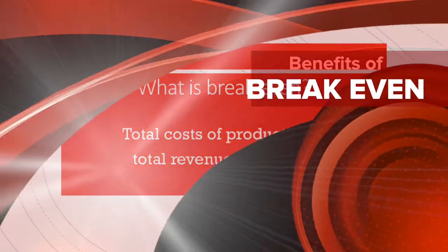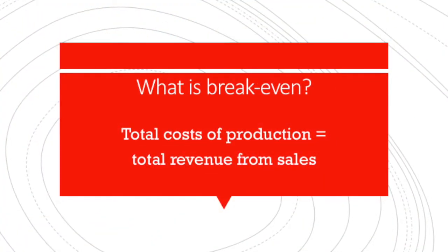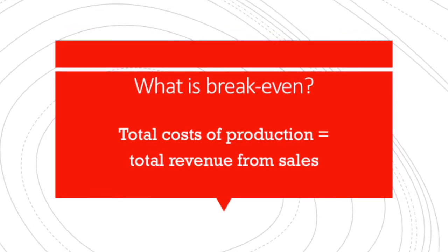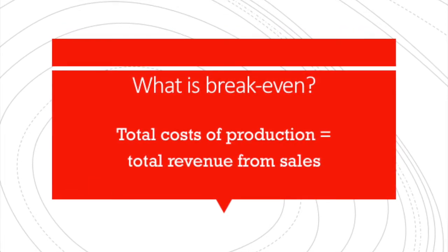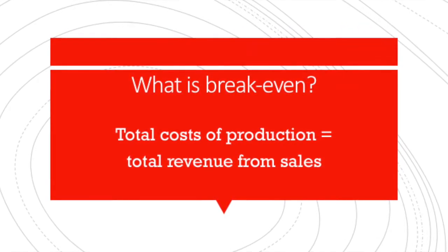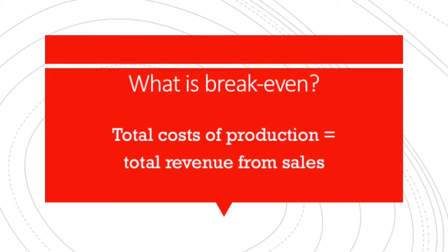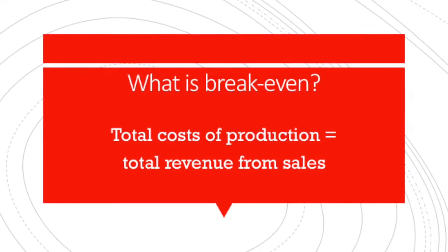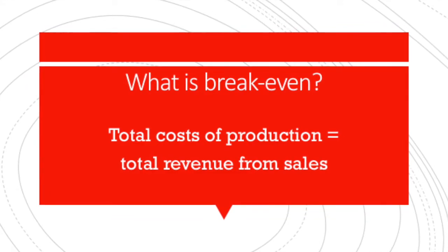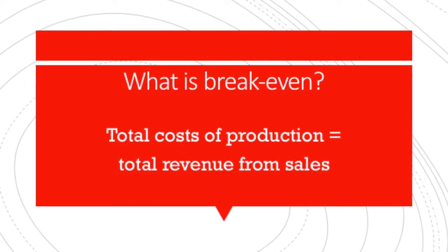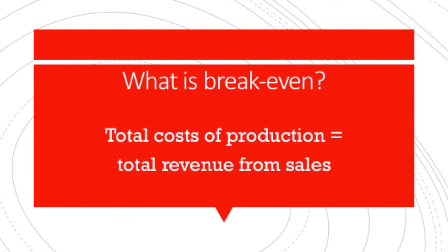Businesses use information about revenues and costs to calculate the break-even level of output. A business breaks even when its total costs of production are equal to its total revenue from sales. This means that the business doesn't make a profit, but nor does it make a loss.